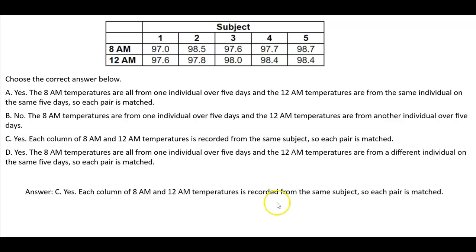Well, the answer is C. Yes, each column of 8 a.m. and 12 a.m. temperatures is recorded from the same subject, so each pair is matched.